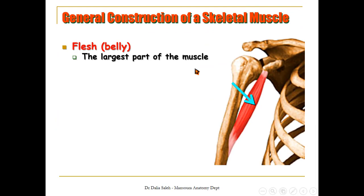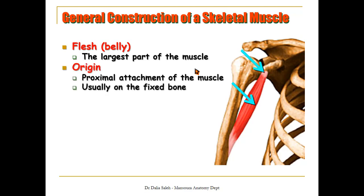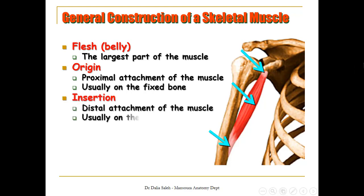The three main parts of the muscle are: the fleshy part or belly, which is the largest part and contains the contractile muscle fibers; and two attachment points. The proximal attachment is called the origin of the muscle — proximal meaning close to the shoulder or hip joint — and it is usually on the fixed, non-moving bone. The distal attachment is called the insertion, and it is usually on the moving bone. Upon contraction, the insertion moves close to the origin.